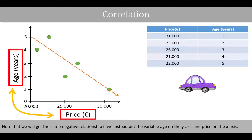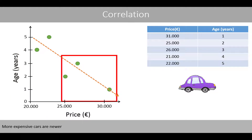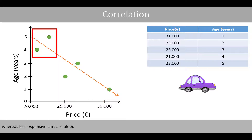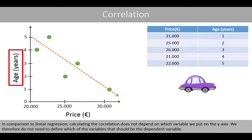Note that we would get the same negative relationship if we instead put the variable age on the y-axis and price on the x-axis, because more expensive cars are newer whereas less expensive cars are older. In comparison to linear regression, calculating the correlation does not depend on which variable we put on the y-axis. We therefore do not need to define which variable should be the dependent variable.